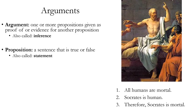Critical Thinking Rule 1: Resolve Premises and Conclusion. An argument is one or more propositions given as proof of or evidence for another proposition. This can also be called an inference. Critical thinking is focused on analyzing and evaluating arguments to understand their structure and to see how effective they are.